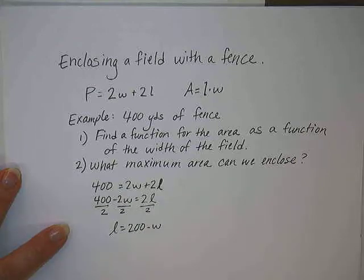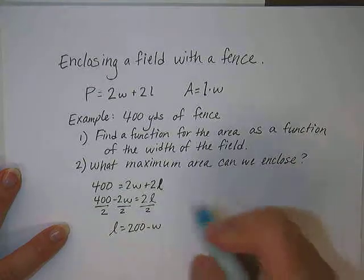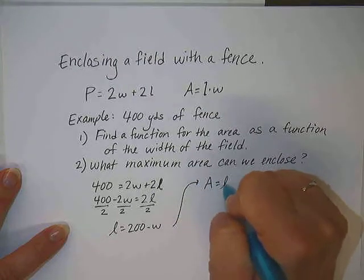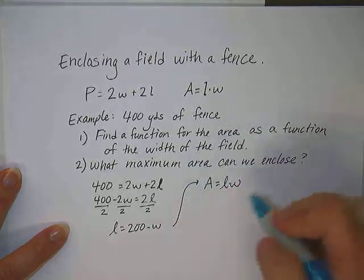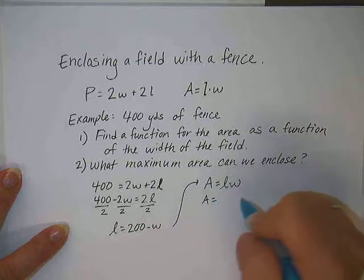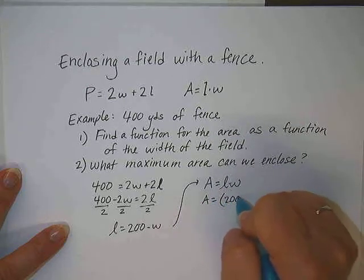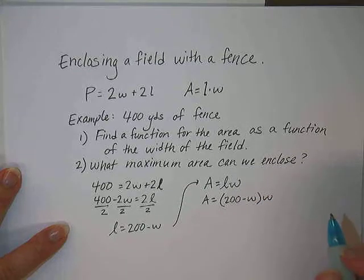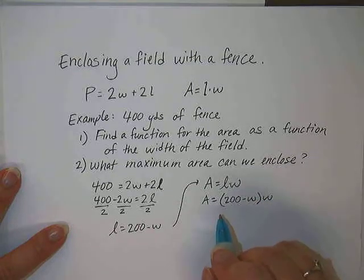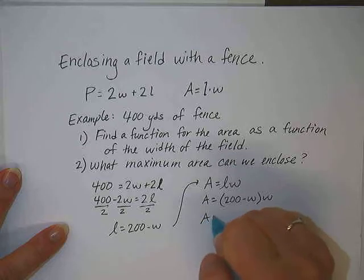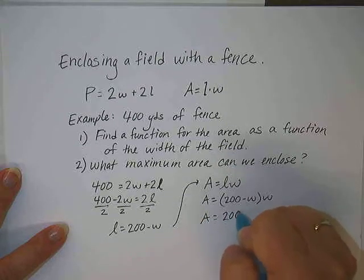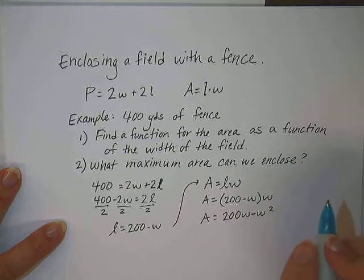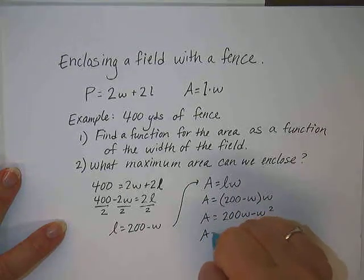So that means that L will equal 200 minus W. I kind of switched sides so that I have what L equals instead of having this over here. Now I can take what L equals and I can plug it into the area formula, which is length times width. So instead of length, I'm going to put 200 minus W in place of that. So there's a function, I could leave it like that. Or I could multiply the W through so that I have 200W minus W squared.